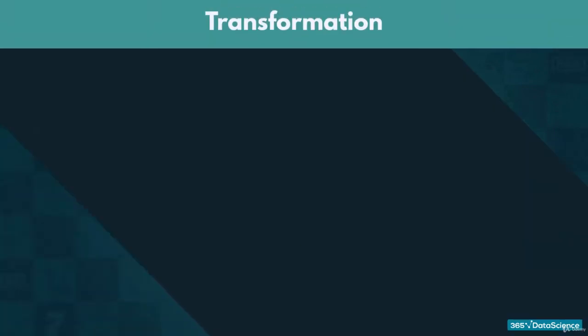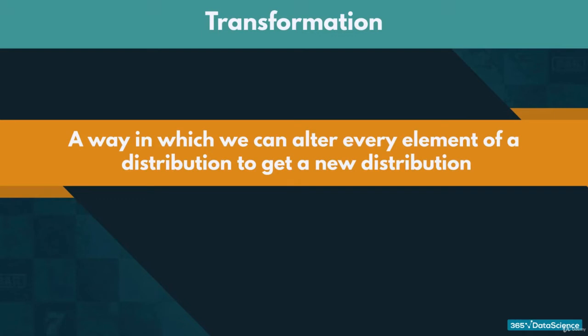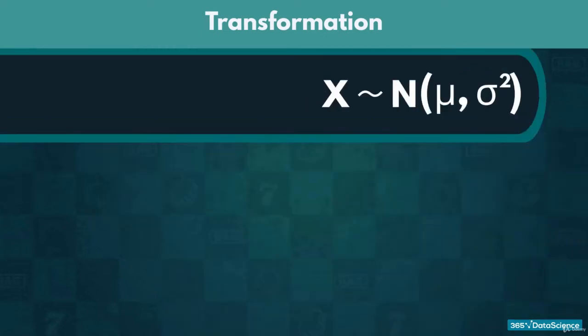A transformation is a way in which we can alter every element of a distribution to get a new distribution with similar characteristics. For normal distributions, we can use addition, subtraction, multiplication, and division without changing the type of the distribution.